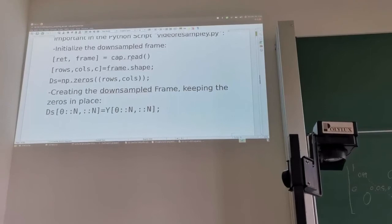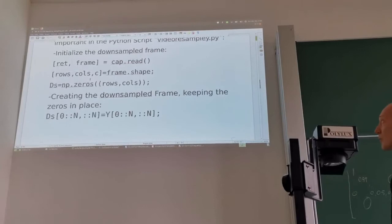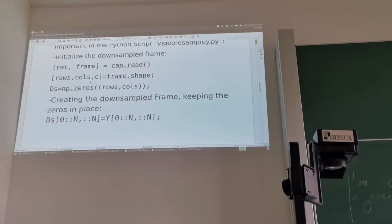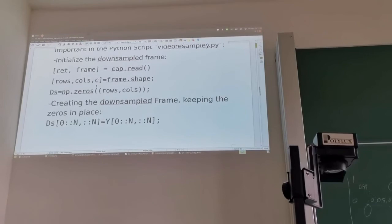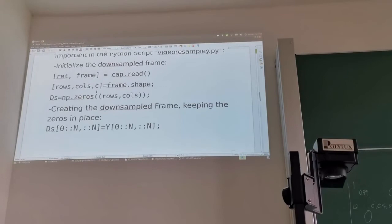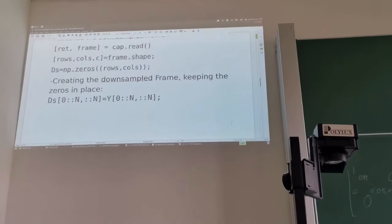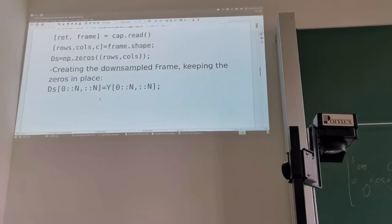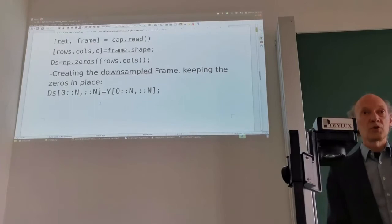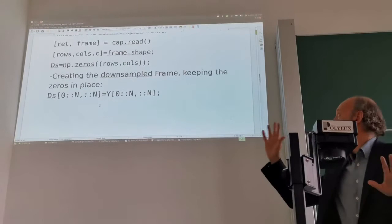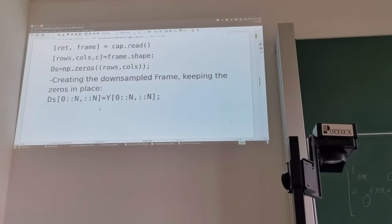The script initializes our frame by reading from the camera, then reads out the size of our frame using .shape, which gives us the dimensions: rows, columns, and c the number of colors — 3 in this case for a color camera. We create a frame of our downsampled picture by initializing with zeros, then write every nth sample of our video picture into it. Only every nth pixel horizontally and vertically is copied from the original frame.